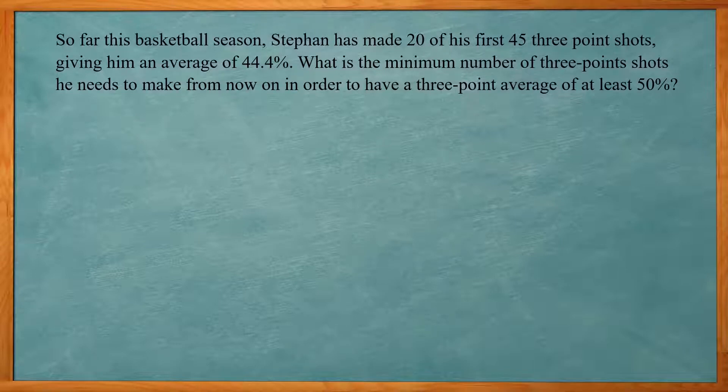So this one says, so far this basketball season, Stefan has made 20 of his first 45 three-point shots, giving him an average of 44.4%. What is the minimum number of three-point shots he needs to make from now on in order to have a three-point average of at least 50%? So again, we're basing it off our summation of x divided by n. So, so far they have 20 made out of 45. So that's 20 over 45.